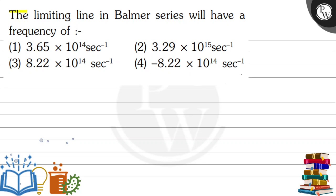Hello Bachchon, let's read the question. The limiting line in Balmer series will have a frequency of — we have 4 options: option 1: 3.65 × 10¹⁴ s⁻¹, option 2: 3.29 × 10¹⁵ s⁻¹, option 3: 8.22 × 10¹⁴ s⁻¹, and option 4: −8.22 × 10¹⁴ s⁻¹.